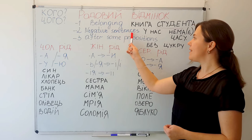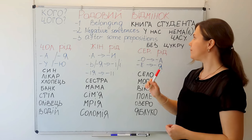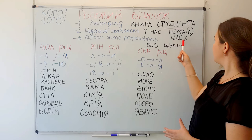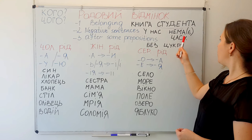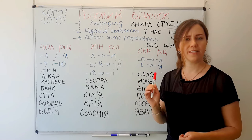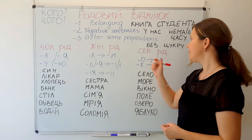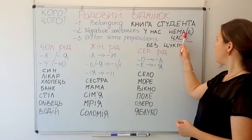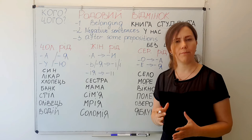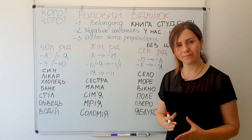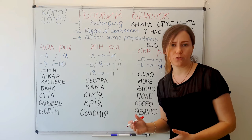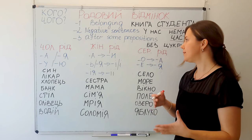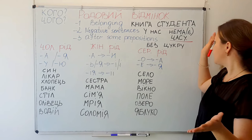We also use the genitive case for some negative sentences. For example: у нас немає часу — 'we have no time' or 'we don't have time.' Time here is час, but in the genitive case it becomes часу. У нас немає часу. У нас немає хліба — 'we have no bread.' So for negative sentences you need your noun in the genitive case.